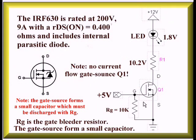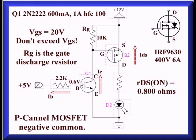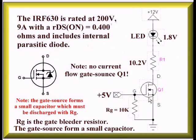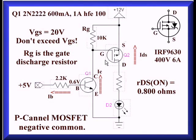Someone might ask why not use a simpler circuit without the extra transistor. The reason is that P-channel MOSFETs will be used when we get to H-bridges in another video. Here is a basic H-bridge motor control diagram — the P-channel circuit connected in series with the N-channel circuit, with four of them total. I'll go deeply into H-bridge motor controls in that other video.